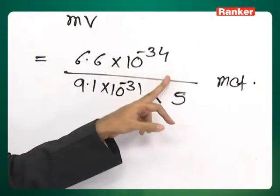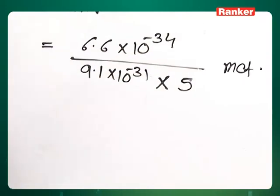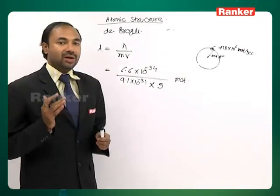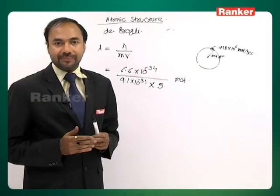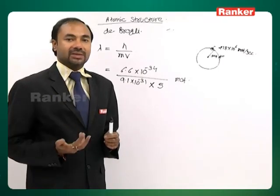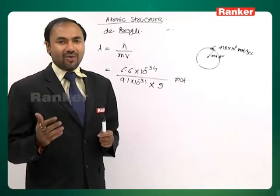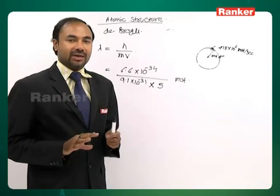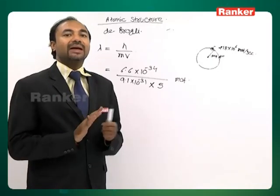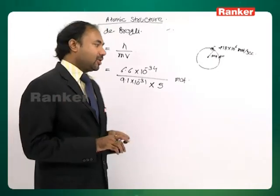Now the case is that actually De Broglie wavelength is significant only in case of subatomic particles. In case of larger objects like human beings or truck or car you can calculate that, but the wavelength is found to be negligible for them. We can show that part also here.